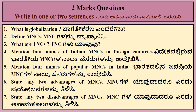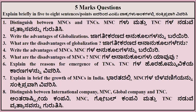Write four company names. State any two advantages of MNCs and state any two disadvantages of MNCs. You have to explain each point — just don't write the points, you have to explain them.